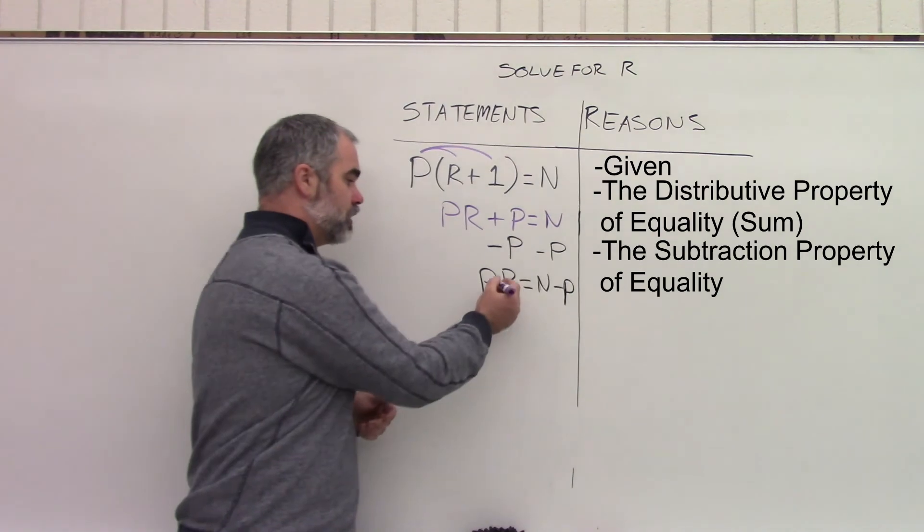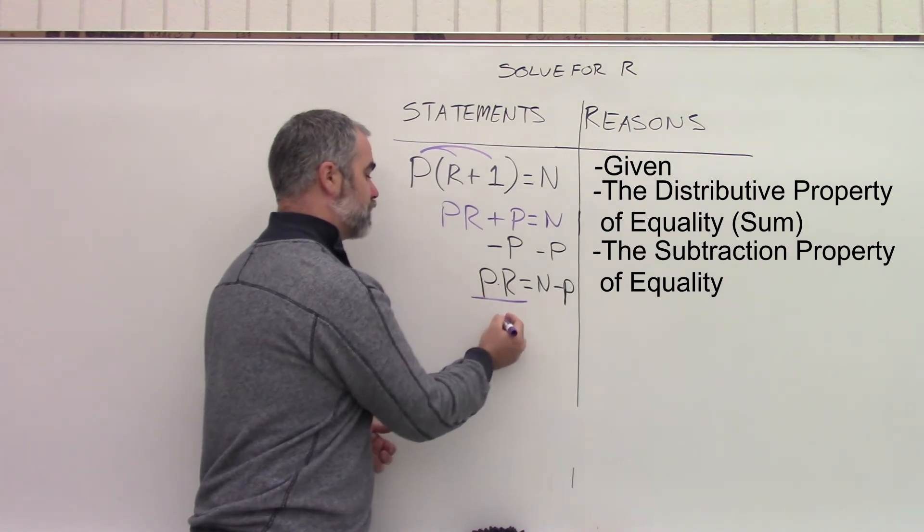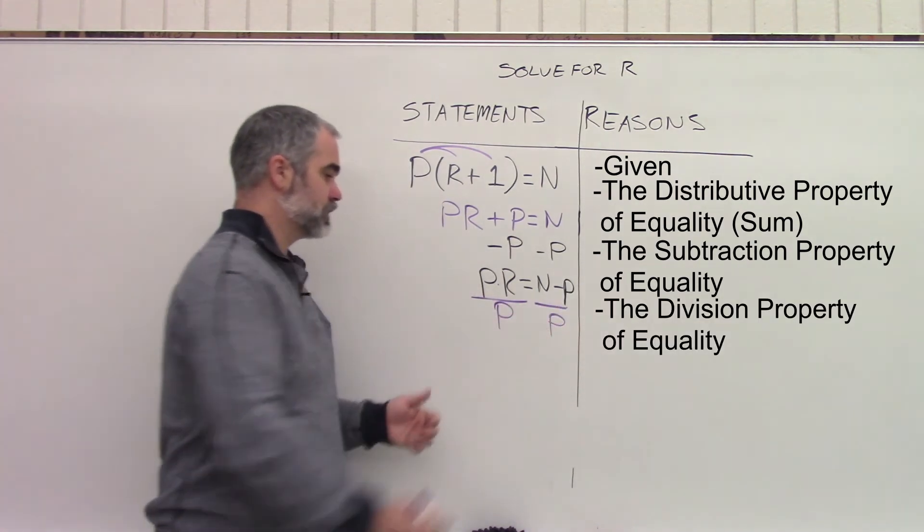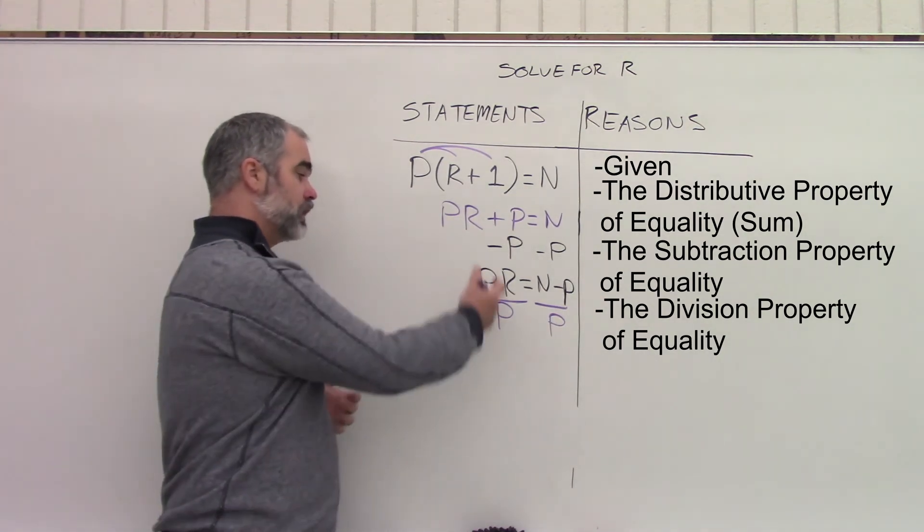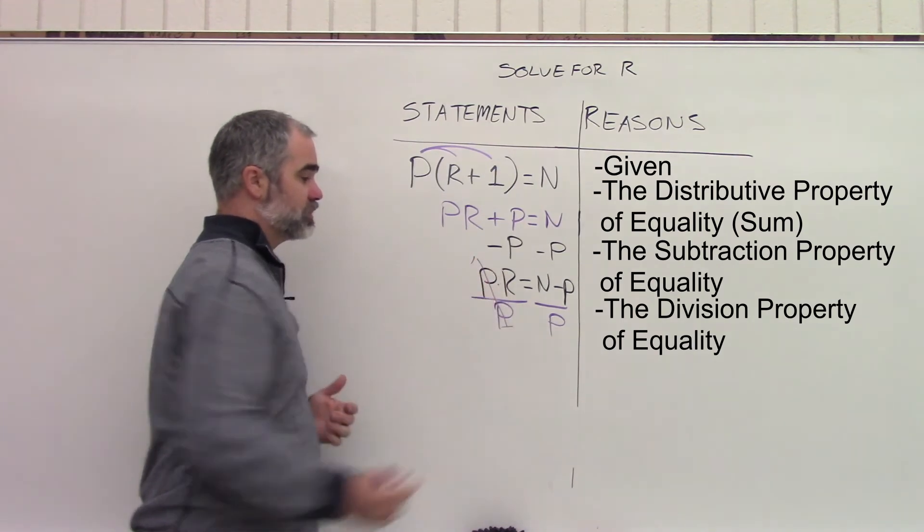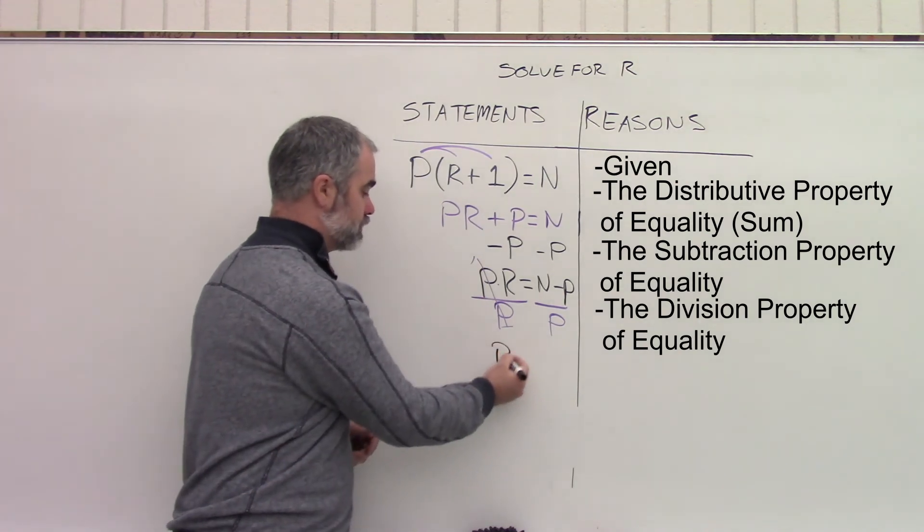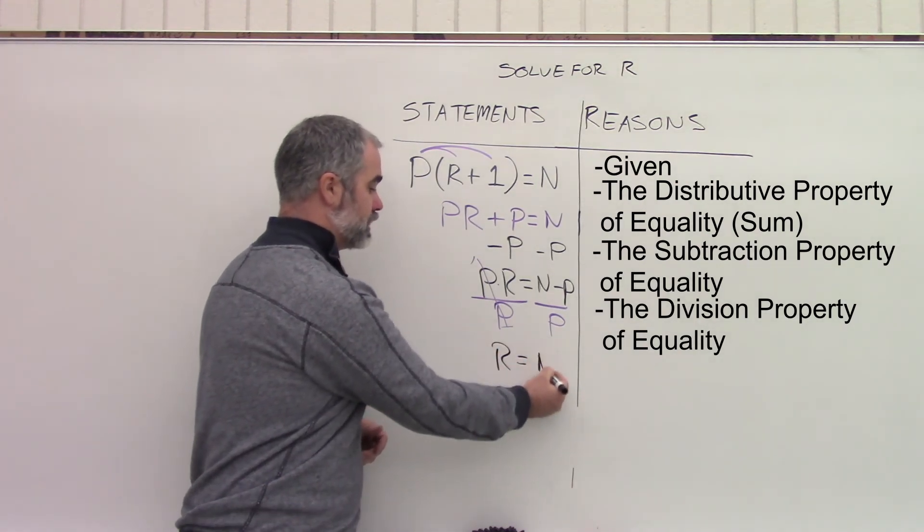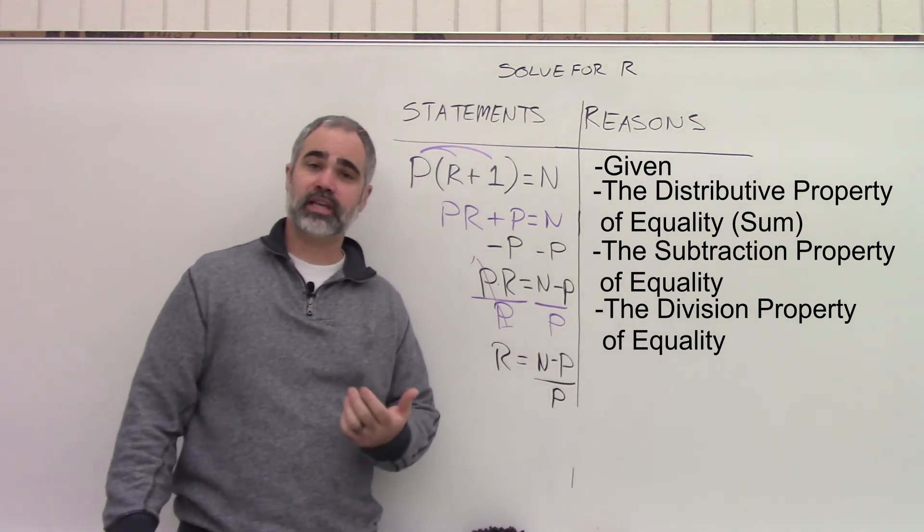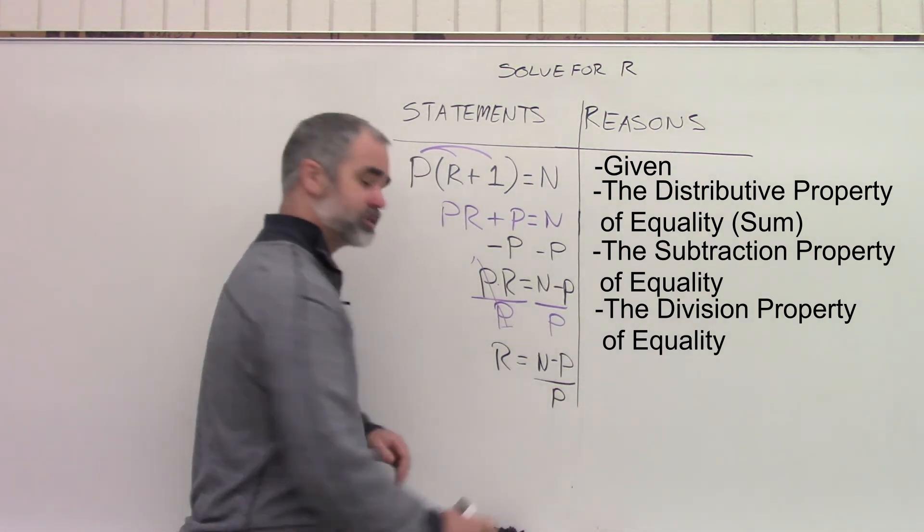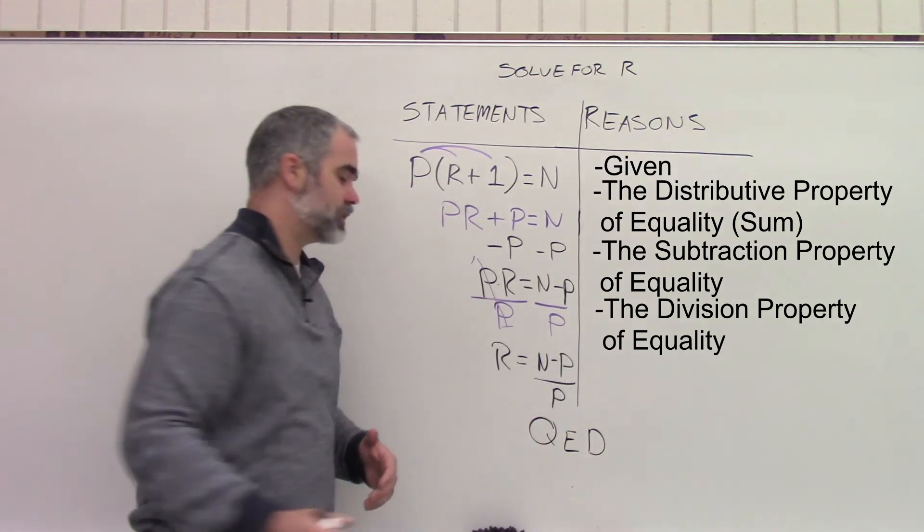Now we have one more thing left to do. This is P times R. The opposite of multiplication is division. So once again, we're going to divide by P on both sides. And that's the division property of equality. These will cancel out into a big one because anything divided by itself is one. And that just leaves you with R equals N minus P over P. That's all that's left. You don't need a justification for your answer. But what I would like you to write, this will impress your math teachers. I'm going to write QED at the end to say that your proof is done. The end. I have set out what I came to prove.